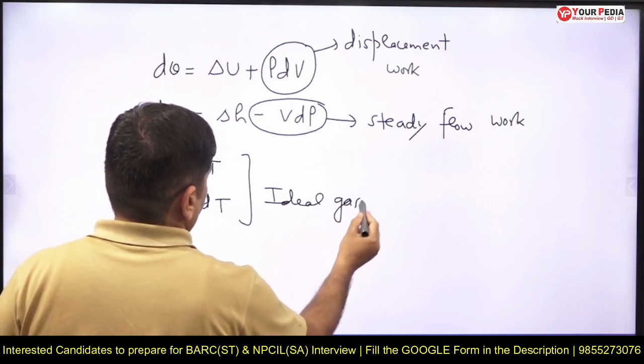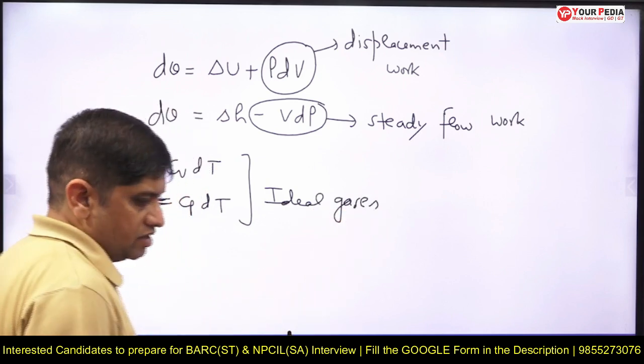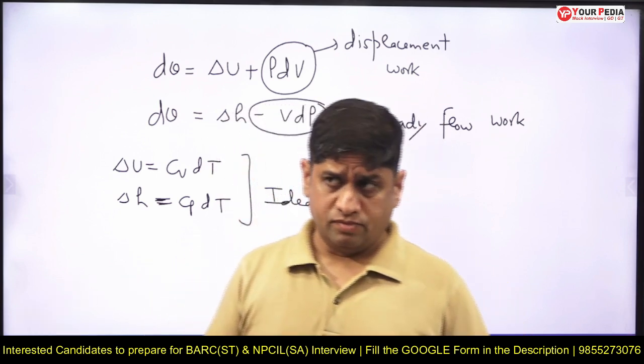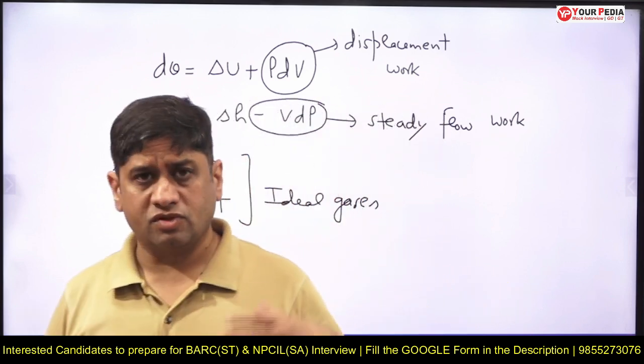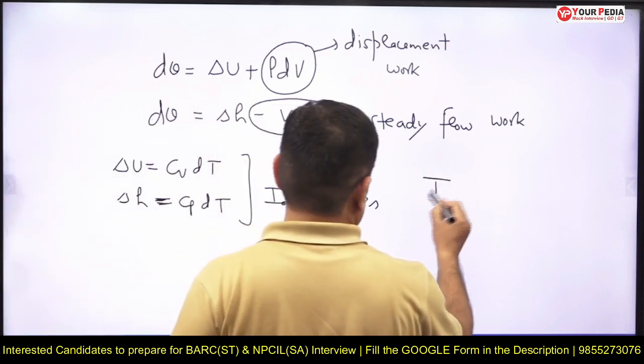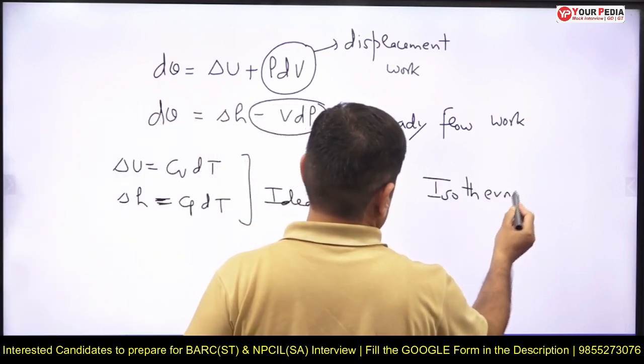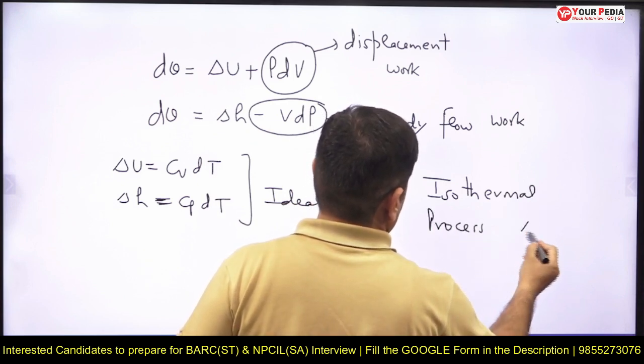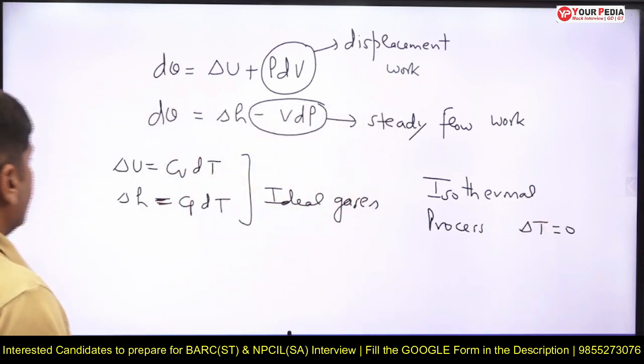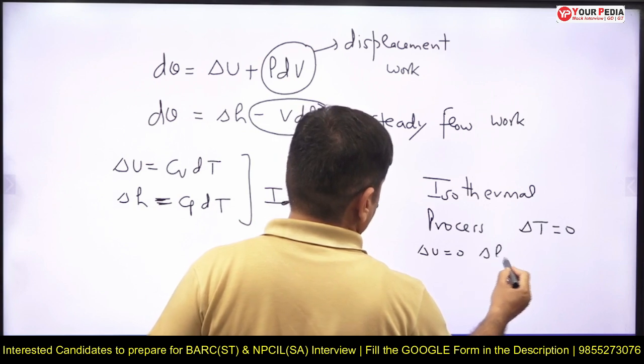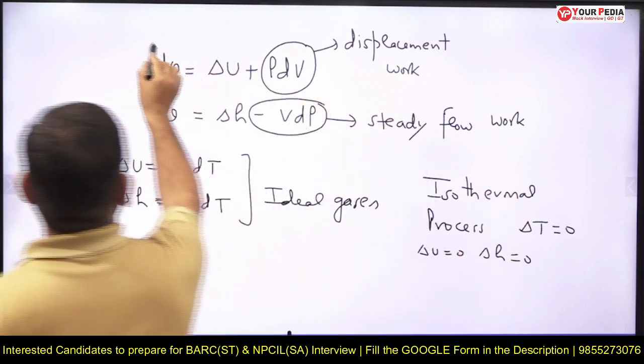For ideal gases, internal energy change and enthalpy change, because they are thermodynamic properties, for any processes these are their formulas. Now if I give you isothermal process, which is one of the reversible processes, then delta T will be equal to zero for isothermal process, and hence delta U is zero and delta H is also zero.